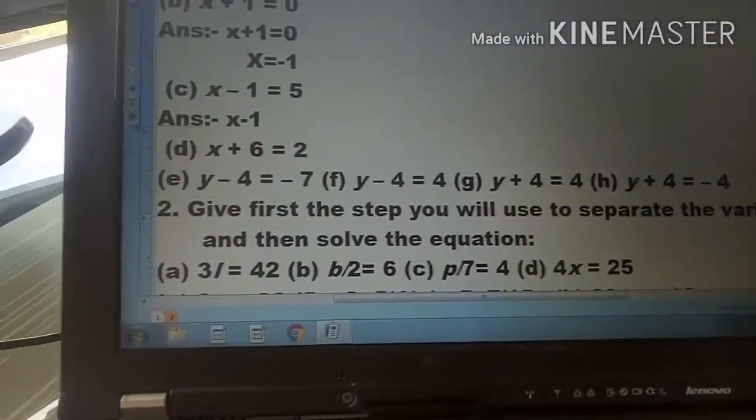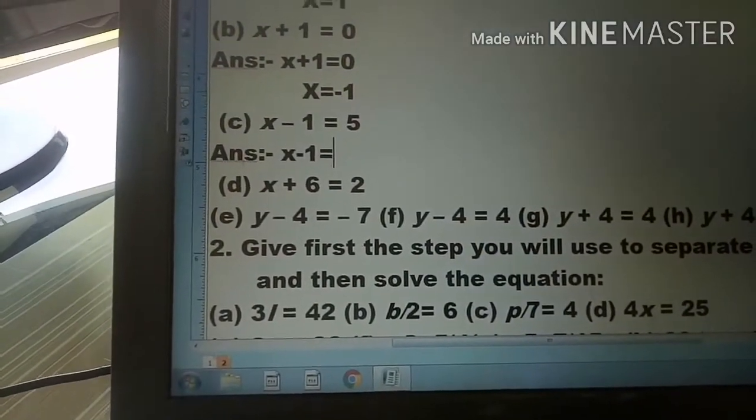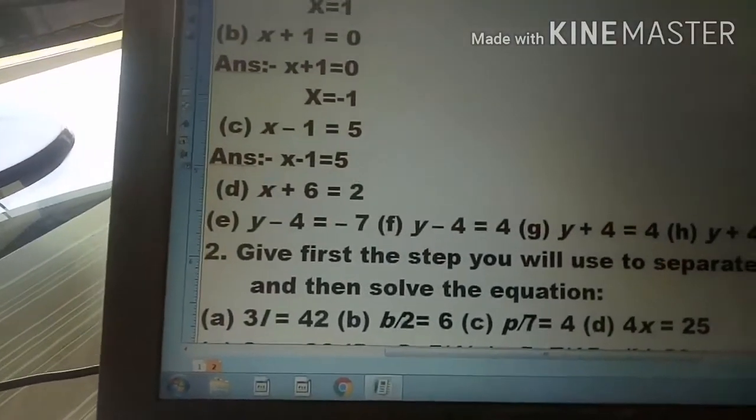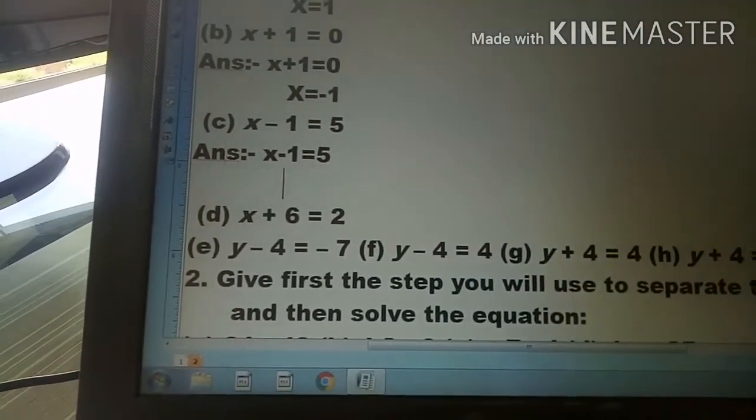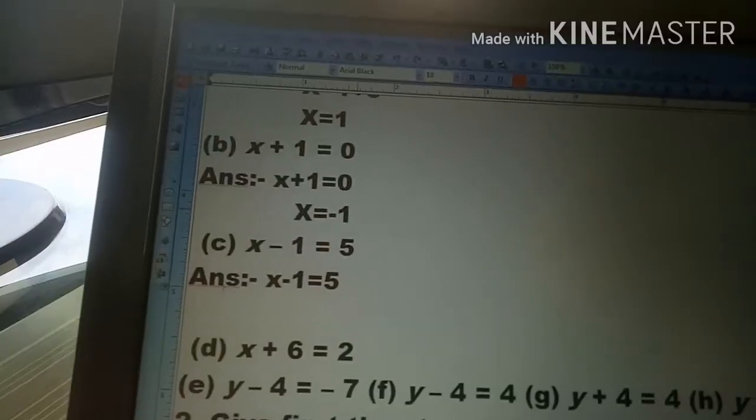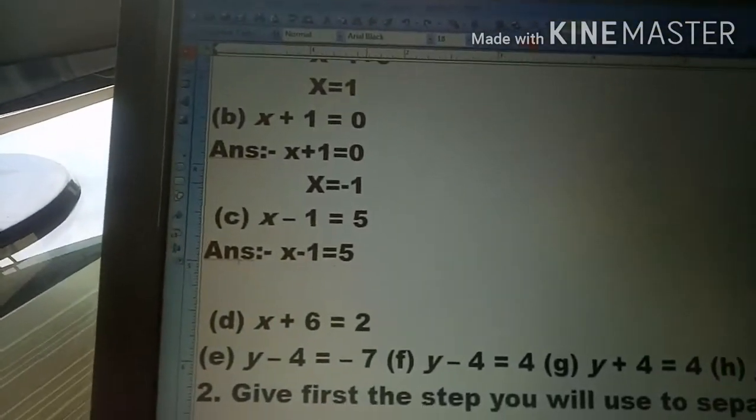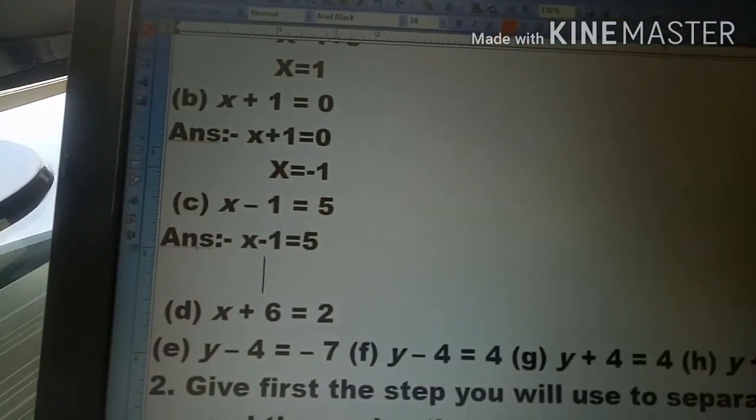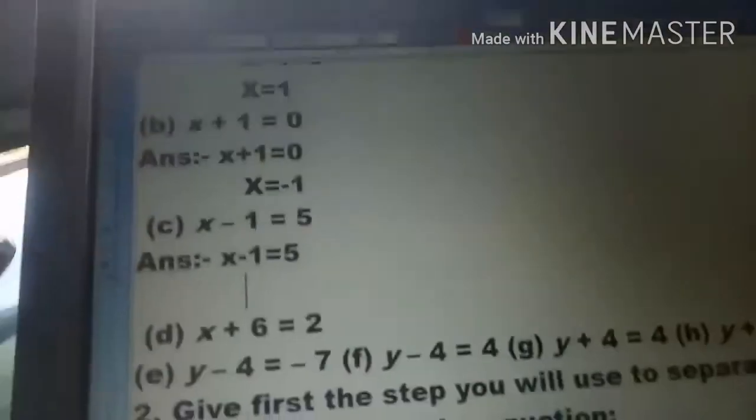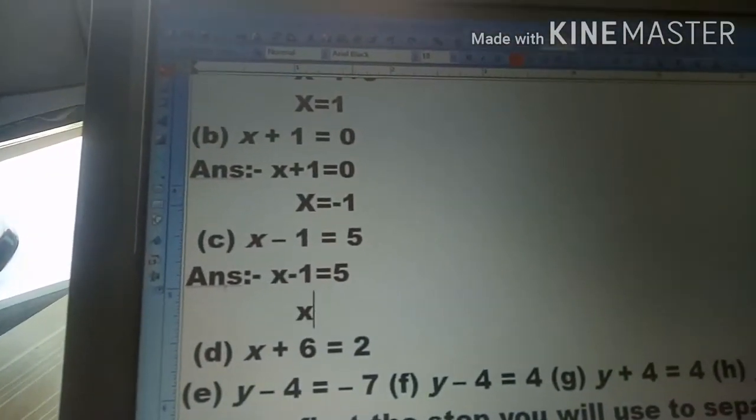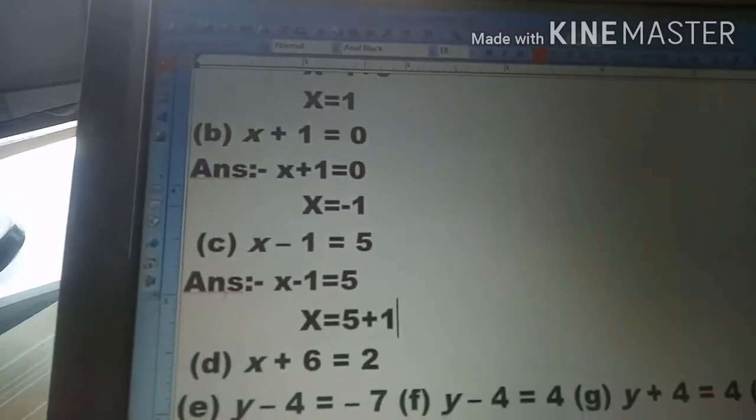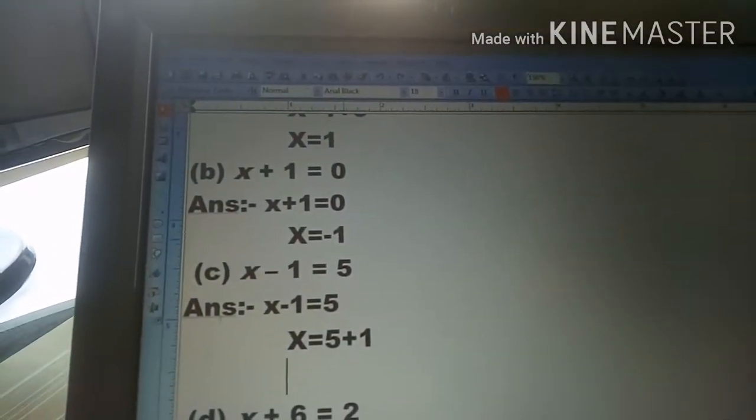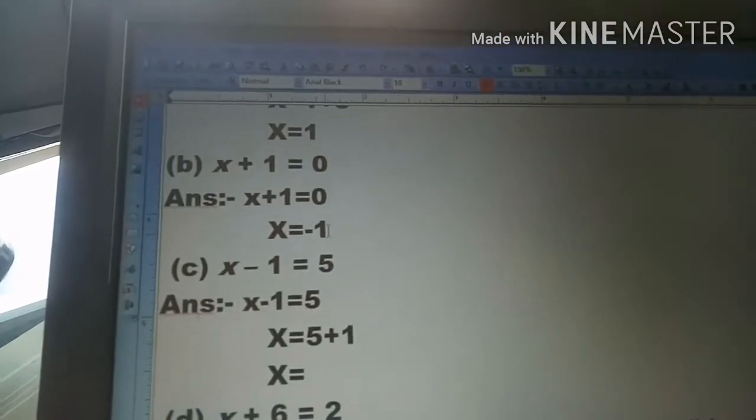For question (c): x minus 1 is equal to 5. So we can move minus 1 to the right side, it becomes plus 1. Therefore x is equal to 5 plus 1, which equals 6.